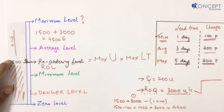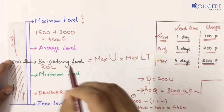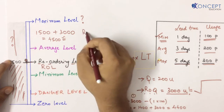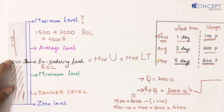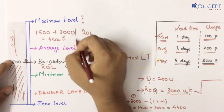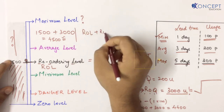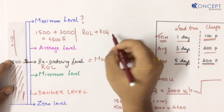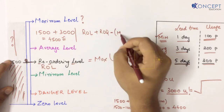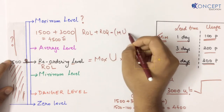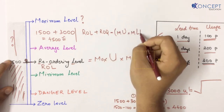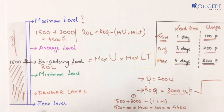So what is the maximum level formula? Maximum level = Re-ordering level + Re-ordering quantity − (minimum usage × minimum lead time). You might think: why minimum usage into minimum lead time? Why not do something else, like average?